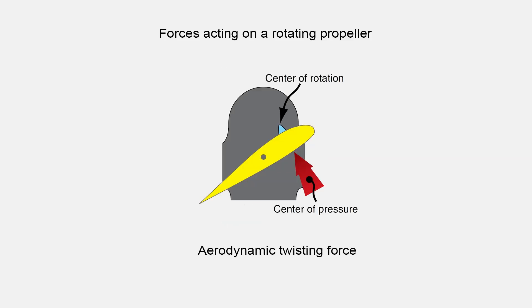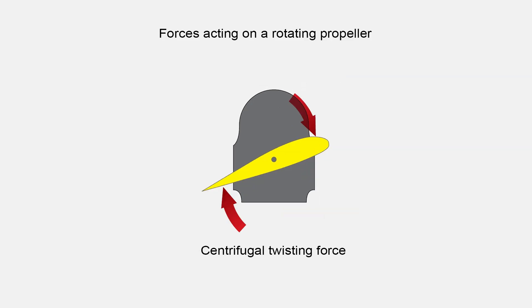Aerodynamic twisting force tends to turn the blades to a high blade angle. Centrifugal twisting force, being greater than the aerodynamic twisting force, tends to force the blades toward a low blade angle.